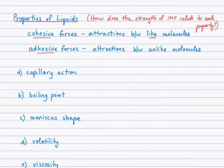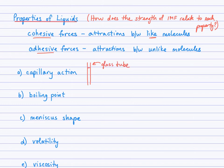Capillary action occurs in plants when they draw water up from roots to leaves. Think of a long, thin tube and the level of water rising up that tube. Cohesive forces are attractions between water molecules, and adhesive forces explain why the water rises up the tube. The glass tube has a certain molecular structure, and the interactions between the bent water molecule and the glass draw the water upward — it's not being pushed, it's being drawn up by attractive forces.